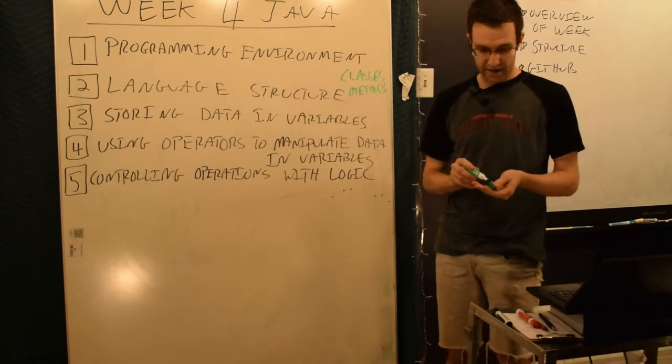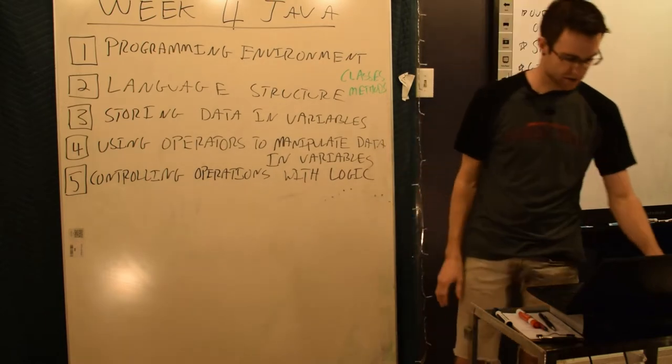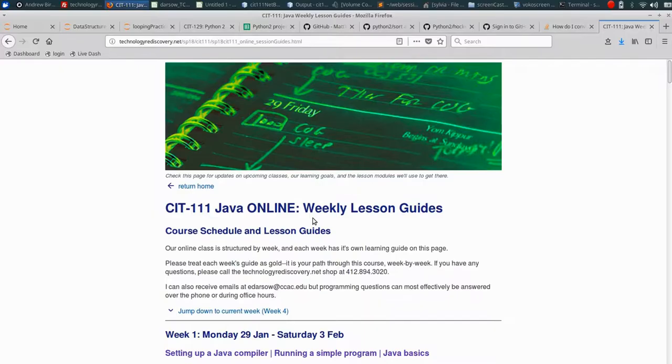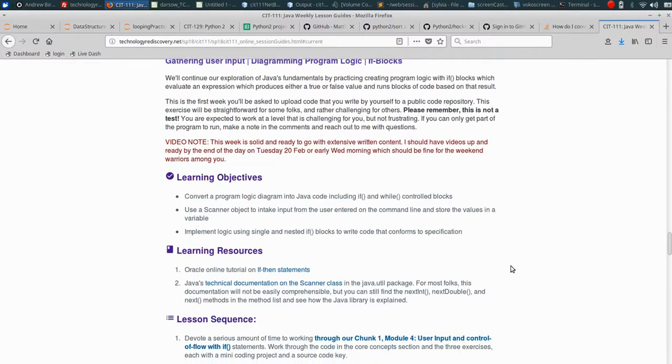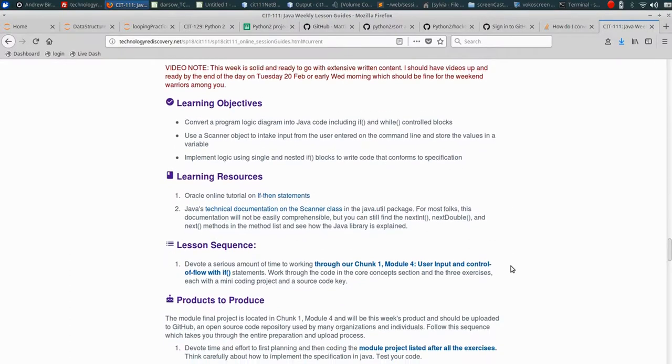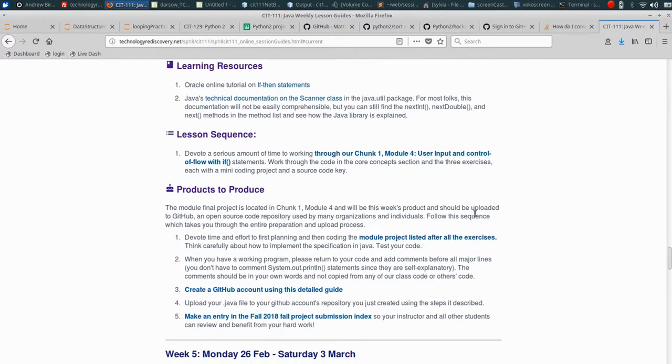Let's look online at technologyrediscovery.net for a sense of structure so you see where this is going. We are here on the CIT 111 weekly lesson guide that we're also familiar with. We can jump down to our current week number four, which will be a good example. There's nothing particularly new about this, other than I want to point out that, in general, we will have online resources that come from Oracle tutorials, the Java documentation, which we'll learn about in depth about halfway through the course, and then references to our textbook.